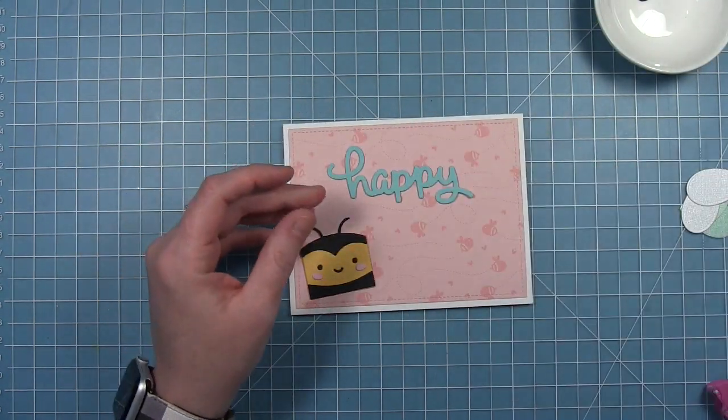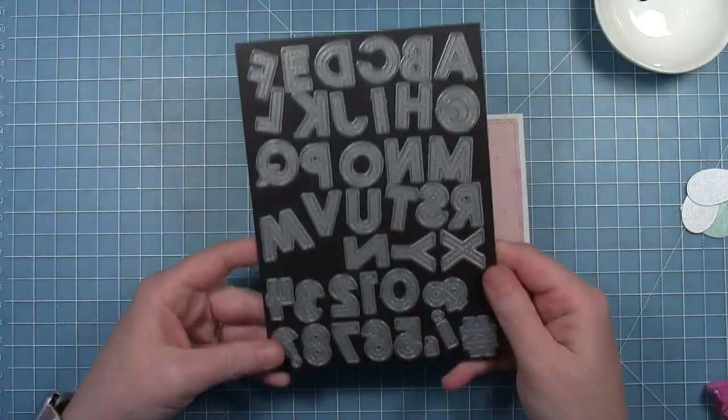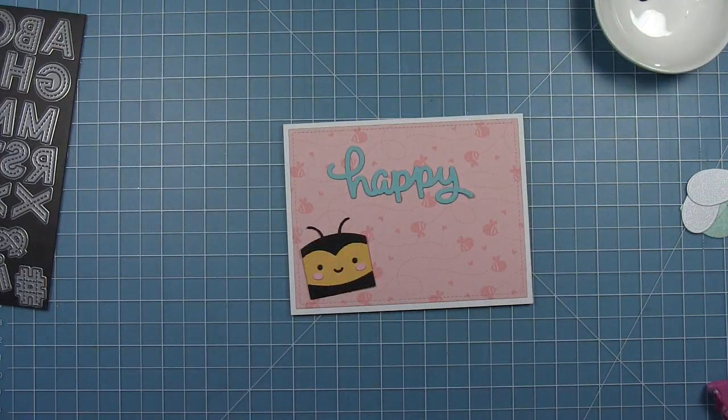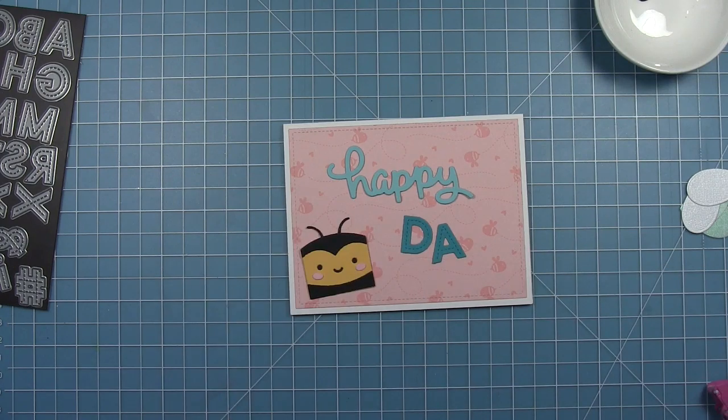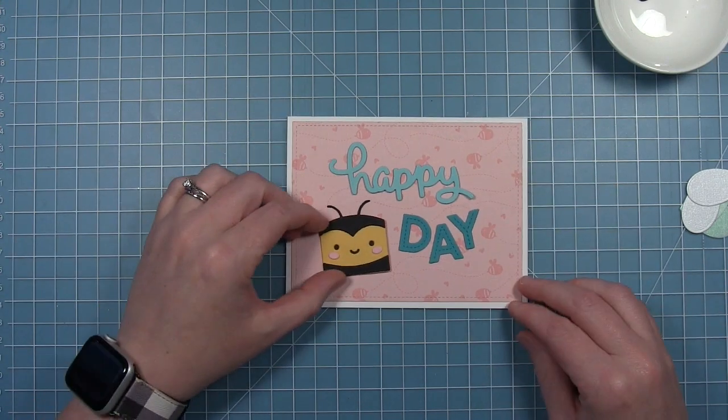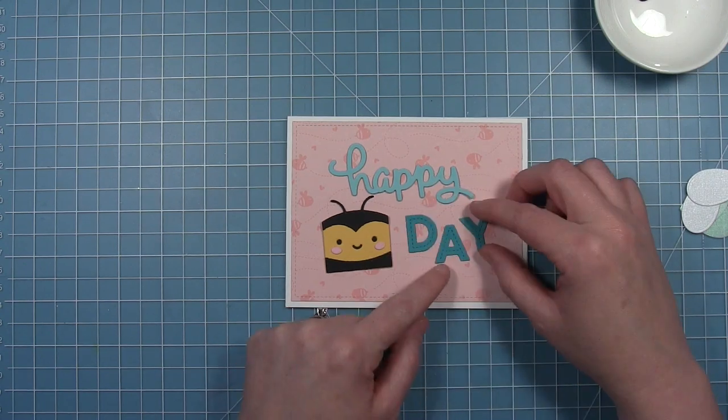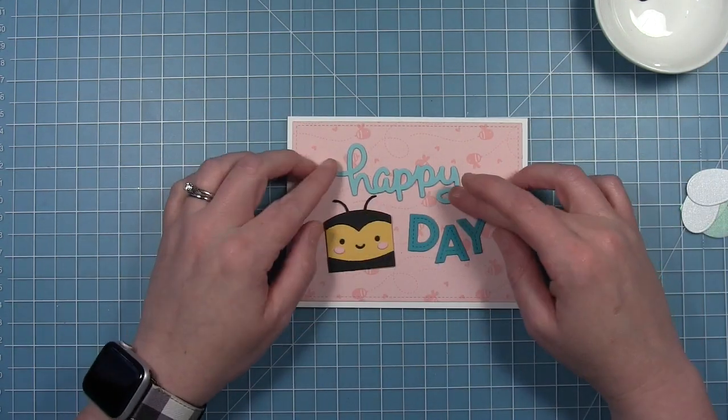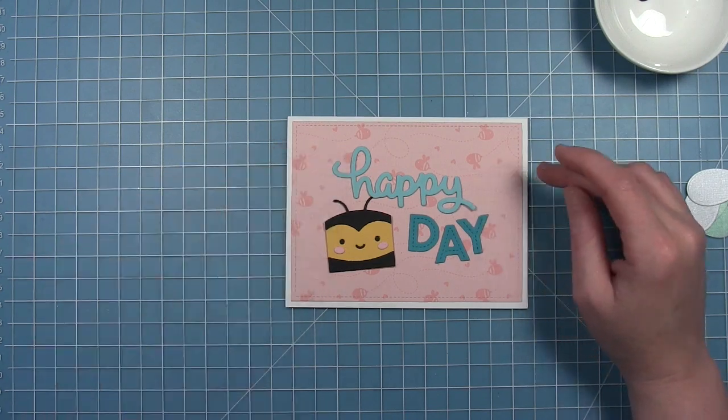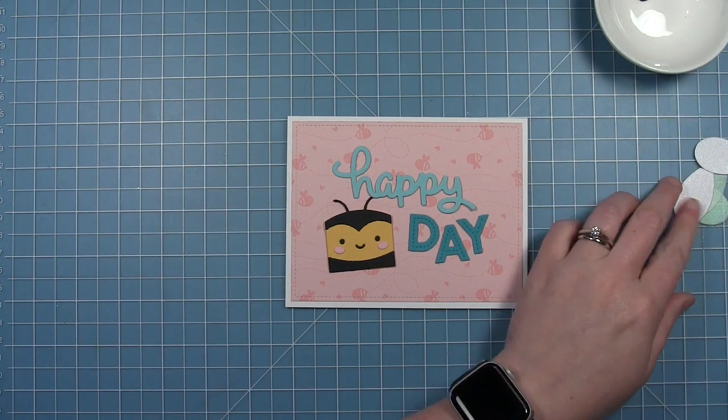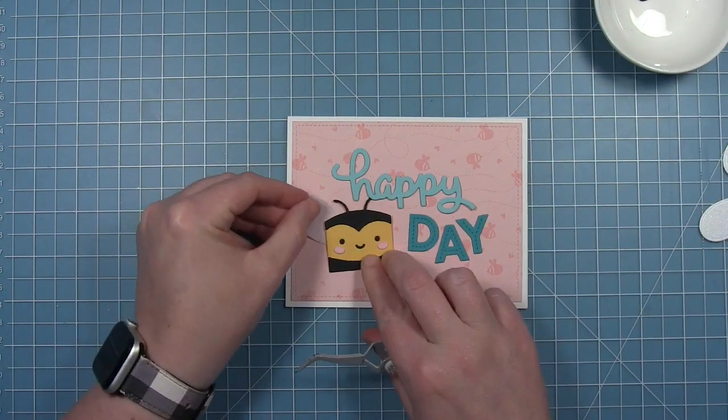I'm using Scripty Happy to cut out the word happy, and then I'm also going to use Oliver's ABCs to die cut the word day. We're going to make this card say happy bee day for happy birthday, but we're going to use the bee's little face as a substitute for the letter B, which I just think is super cute.